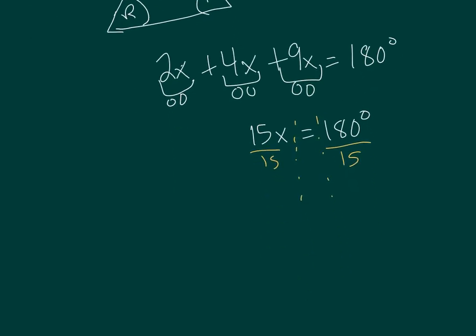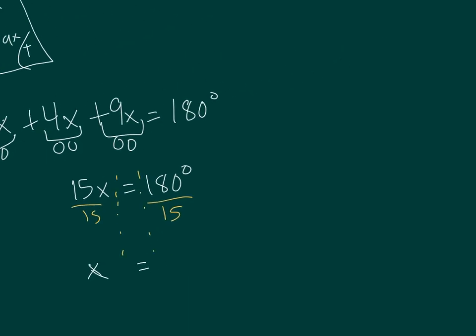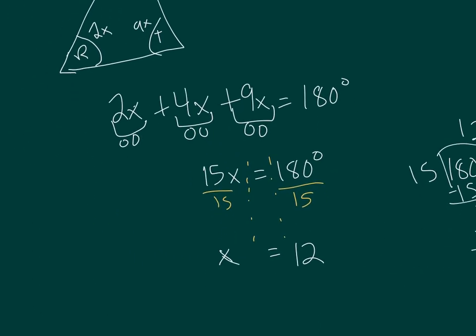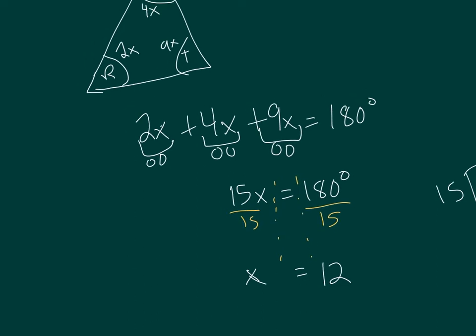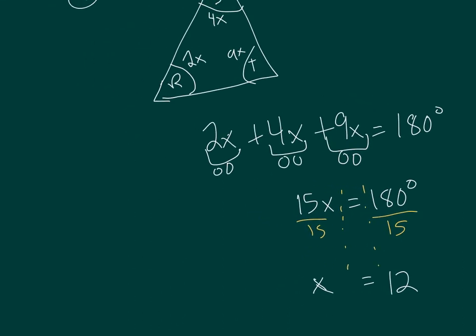That gets you x is equal to 15 goes into 180. Let's do some quick division over here. Top dog in the house, bottom dog sleeps outside. 15 goes into 18 one time, subtract, bring down, and 2 times 15 is 30. So x is equal to 12. Fantastic. Now that we know that, we can go back and solve for those angles, those different angle measures.